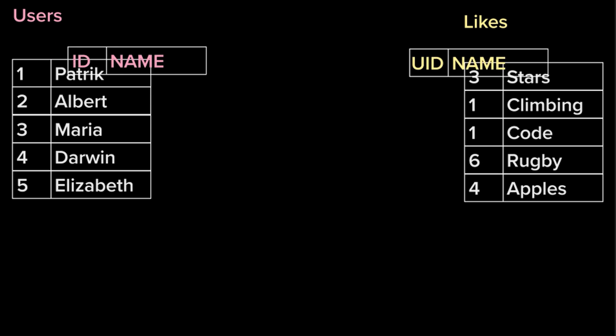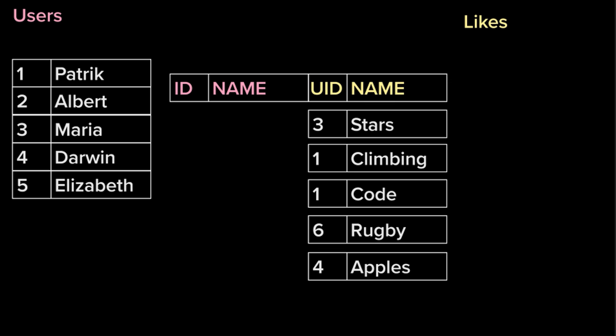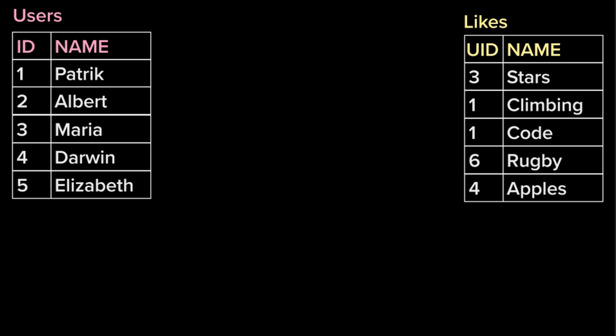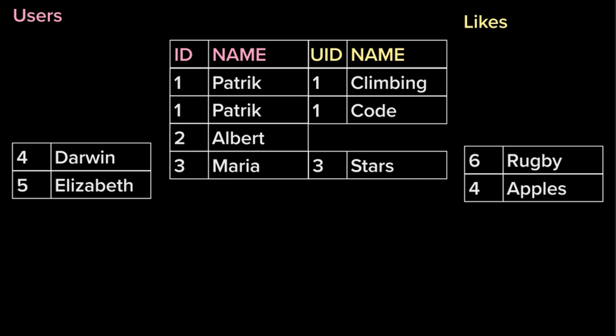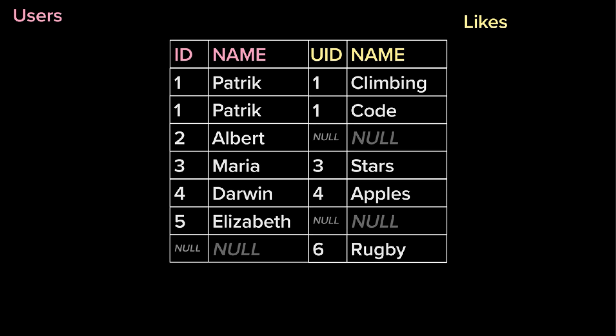Now let's do right join - same thing, but instead we include all the likes this time instead of users. We do the matching, and the last one - rugby - gets null because it has no match. That's pretty much it. Lastly, outer join: we want to include everything, so we keep all users and all likes. If you don't have a match, we just assign null. To be honest, most of the time I only use inner joins and left joins. Outer joins aren't that useful in my opinion.